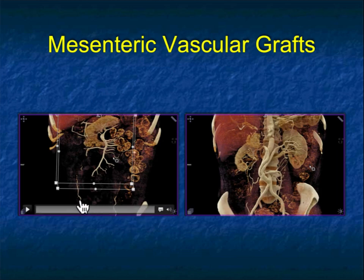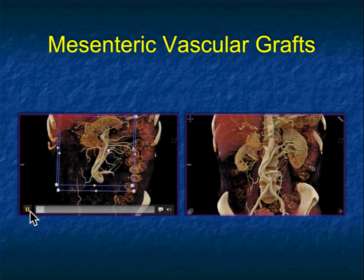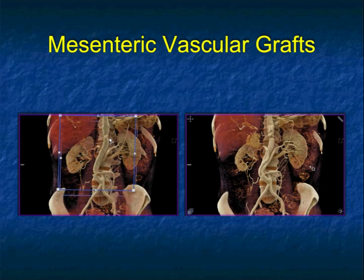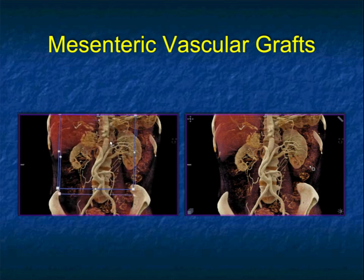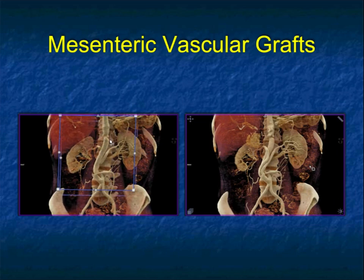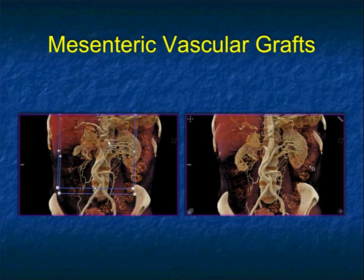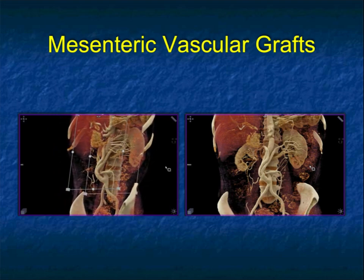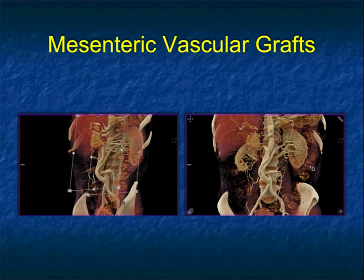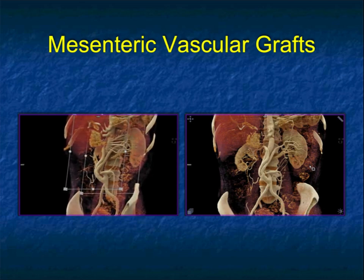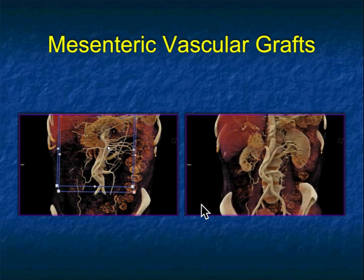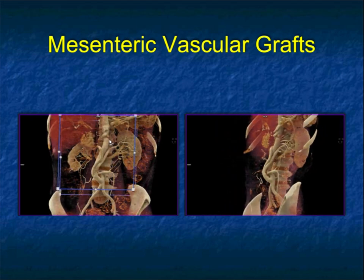Another patient — this patient has mesenteric vascular grafts. It's hard to really appreciate the grafts and their extent and orientation when you look at axial images. But now doing the 3D interactively, you can see the graft that was put on the patient's aorta that goes to the patient's right renal artery and left renal artery. The ability to really interact rather than looking at individual slices — the anatomy is so complex and the vascular reconstruction so complicated that it's only in 3D that you can really appreciate it. Here's rotating both sets of images.